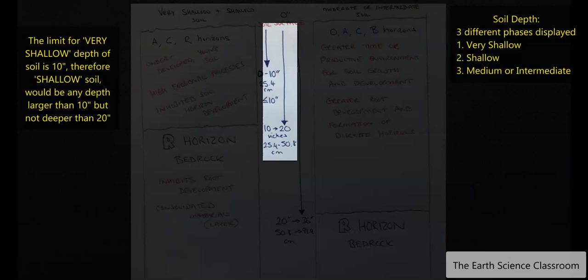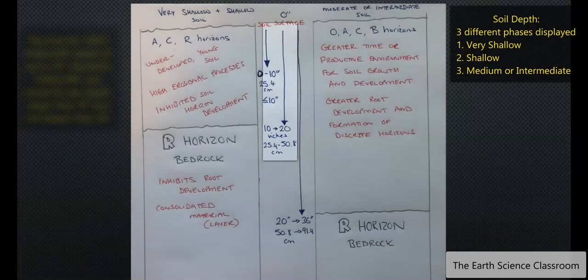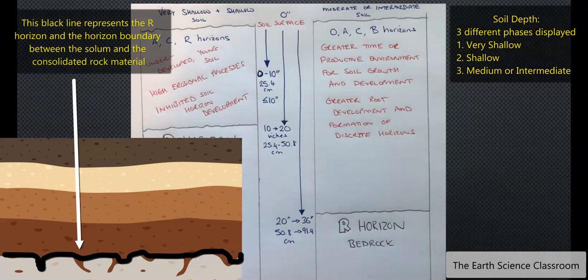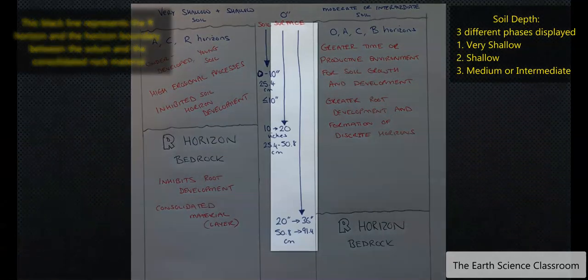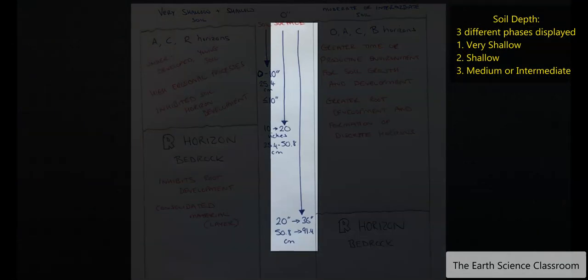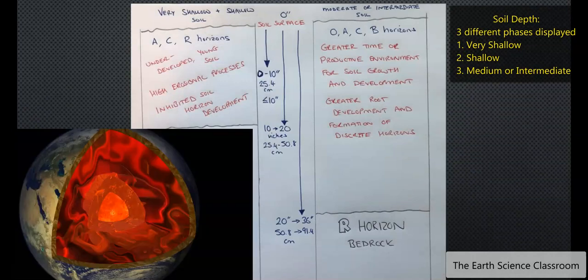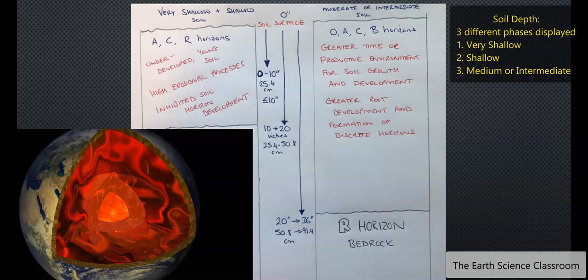Then we have the shallow, the next level up, the next depth down between 10 to 20 inches. So 25 to 50 centimeters in depth before you get down to the bedrock. That boundary between the soil and the actual solid rock that is consolidated. It could be sedimentary, igneous or metamorphic. Now you have the intermediate soil which goes down from 20 inches down to 36 or 3 feet, which is between 50.8 to 91.4 centimeters in depth. Again down to the R horizon which is the bedrock.